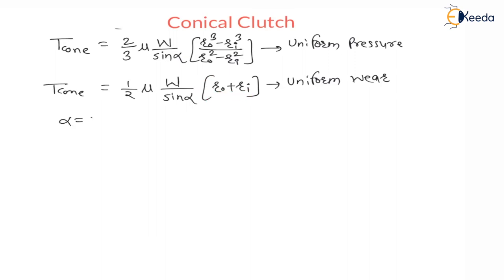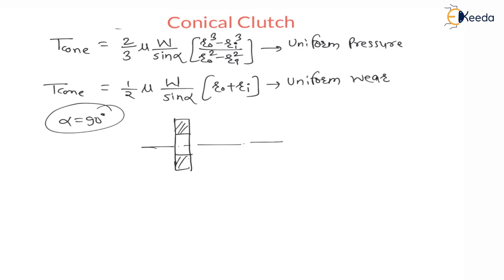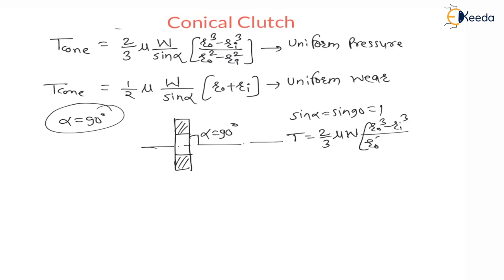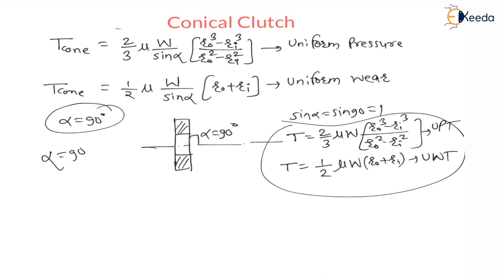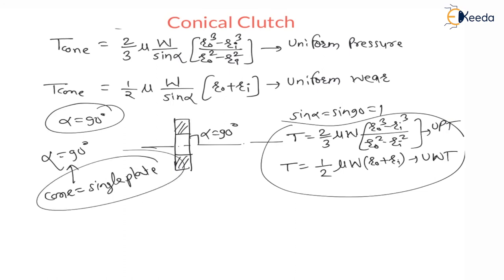If semi-cone angle alpha becomes 90 degrees, that means the clutch plate is perpendicular to the axis. Therefore sin alpha becomes sin 90° = 1. The torque transmitted becomes (2/3) × μ × W × (Ro³ − Ri³) / (Ro² − Ri²) as per uniform pressure theory, and (1/2) × μ × W × (Ro + Ri) as per uniform wear theory — these are the formulas for single plate clutch. Whenever alpha becomes 90 degrees, cone clutch becomes equivalent to single plate clutch, because axial reaction becomes equal to normal reaction.